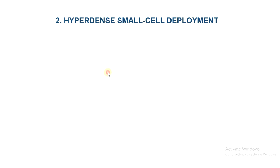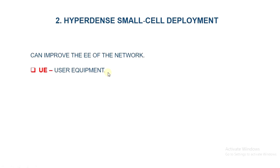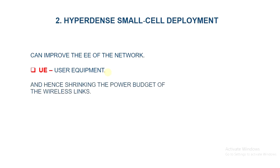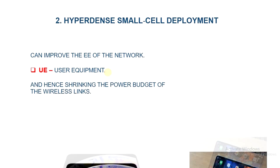Finally, reducing the cell size can also improve the energy efficiency of the network by bringing the network closer to the user equipment and hence shrinking the power budget of the wireless links.